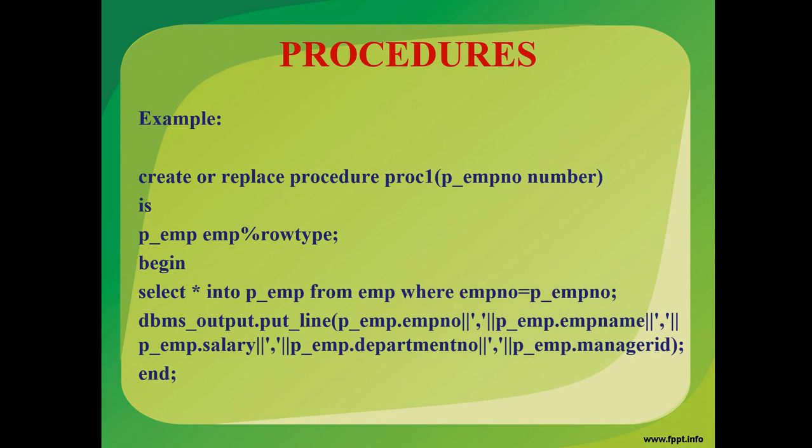Next, by giving BEGIN, we are going to start the executable statement. SELECT * INTO P_EMP FROM EMP WHERE EMPNO = P_EMPNO. Here what we are doing is we are selecting all the columns and we are storing into P_EMP variable for that particular employee number.